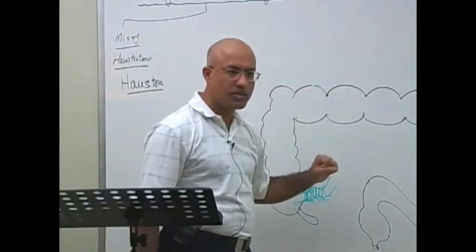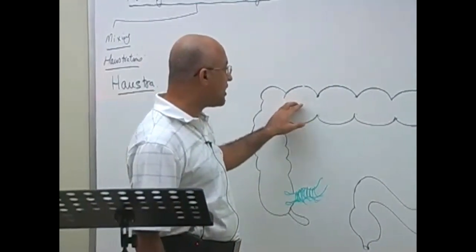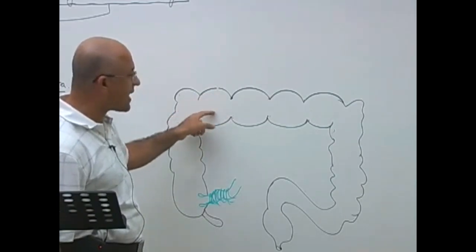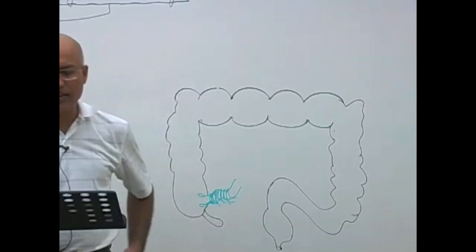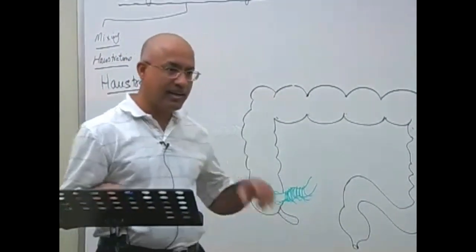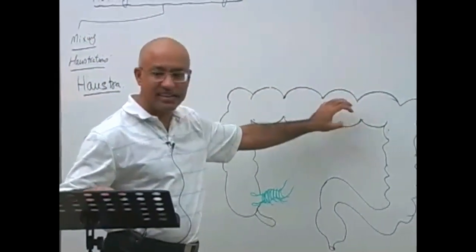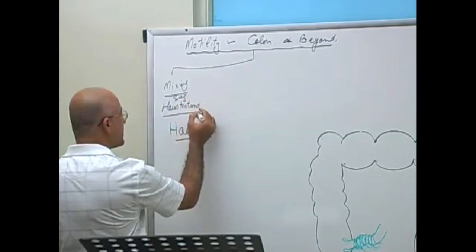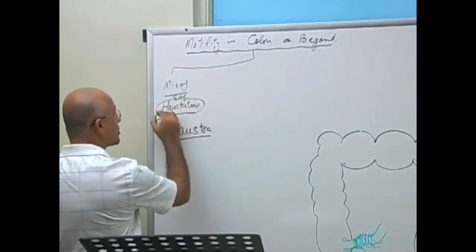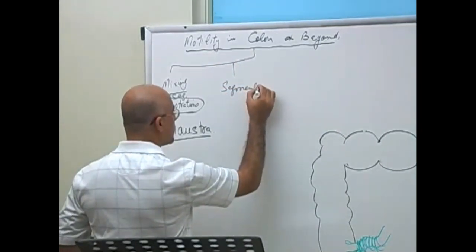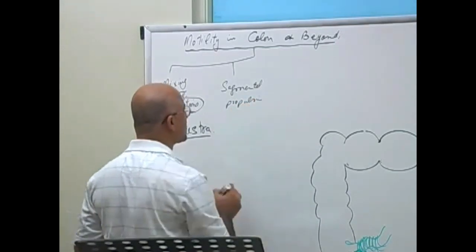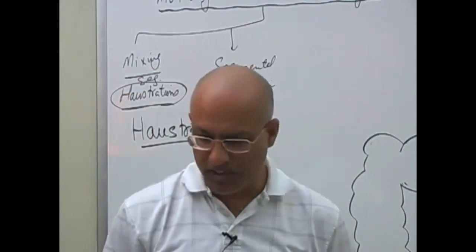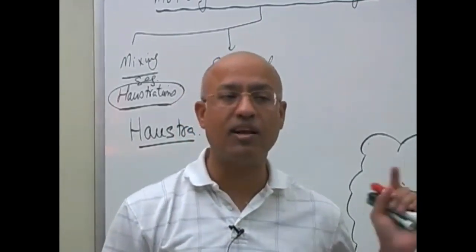While haustrations are produced, there can also be very weak propulsion, where content spills from one haustra to the next. These very weak movements that push content from one haustra bag to the next are called segmental propulsions. So the mixing movements are: number one, segmental haustral production — that is, haustrations; and number two, segmental propulsions, which are very weak and simply push content from one haustra to the next.